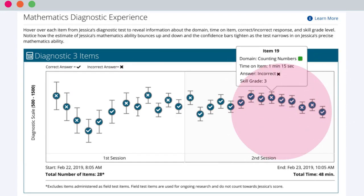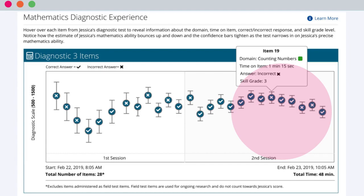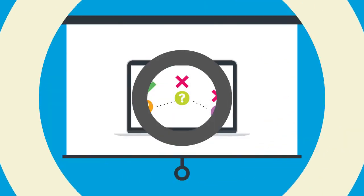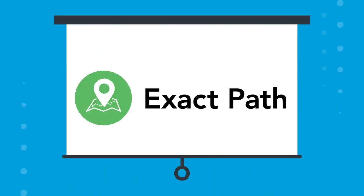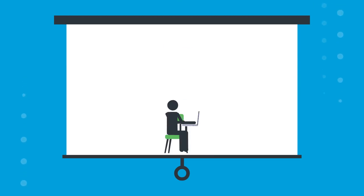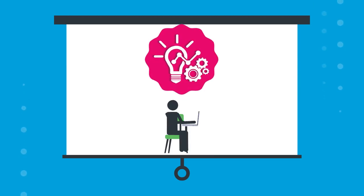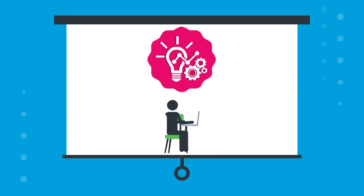The bars around the estimate show the precision of the ability estimate. Notice how the bars tighten as the test continues and narrows in on the student's ability. By using an adaptive diagnostic test, Exact Path is able to place students into content at the level where they are ready to learn and practice new skills.